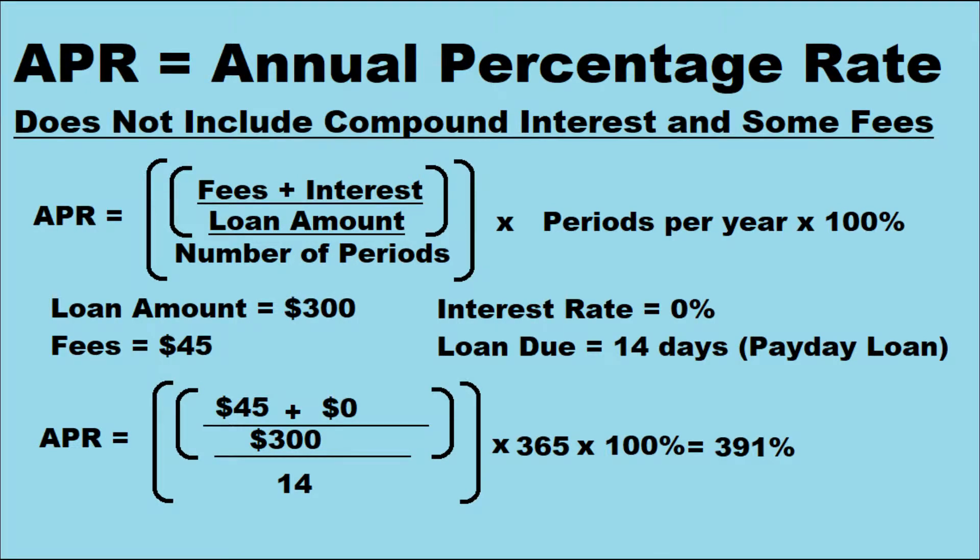So let's say you have a payday loan in the amount of $300, and your fee is $45. They'll say your interest rate is 0%, and you have to pay it back in 14 days. The APR would then be equal to $45 plus the amount of interest you're paying back, divided by the $300 original loan amount, over 14 days in the period and 365 days in a year, multiplied by 100% — you're looking at 391% APR.